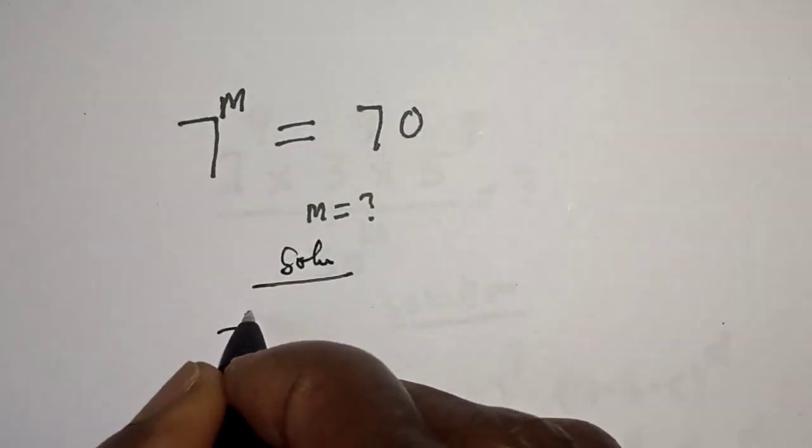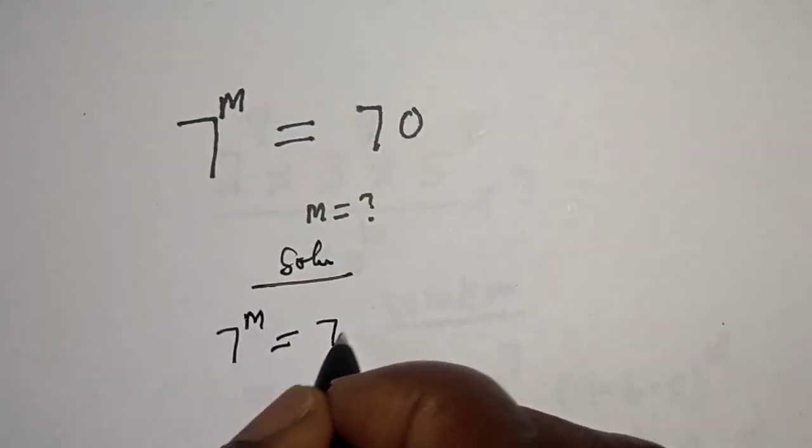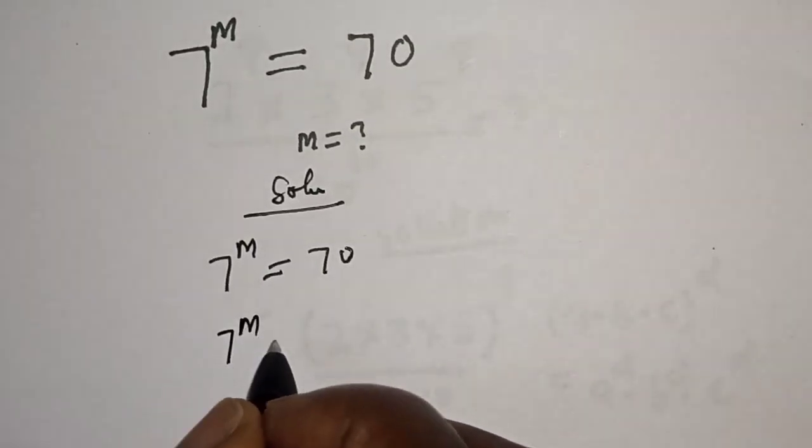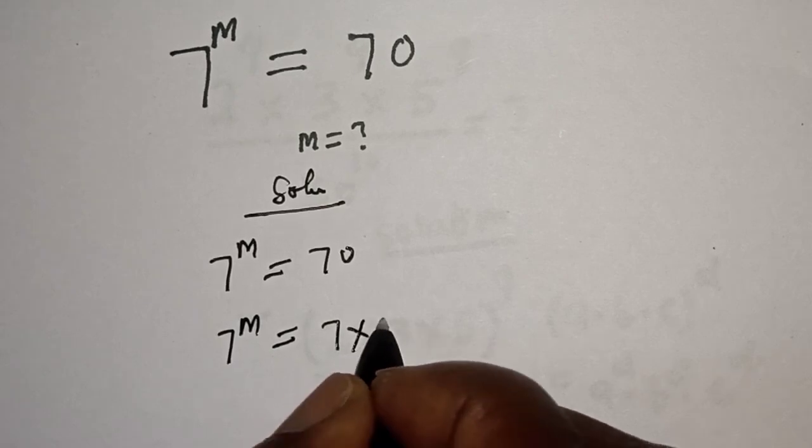7 raised to power m is equal to 70. Then this is 7 raised to power m is equal to 7 times 10.